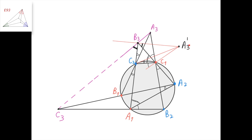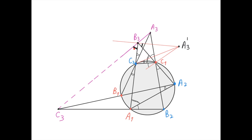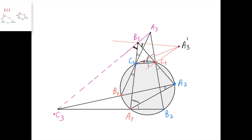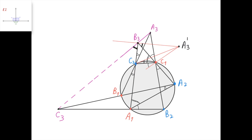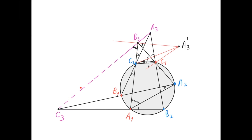We know that A3' and A3 are isogonal conjugates with respect to triangle C1, C2, B3. Therefore, line A3', B3 and line A3, B3 are isogonal with respect to this angle, meaning this angle equals this angle, where this angle is defined as 180 minus angle A3, B3, C2. Since A3' and C3 are corresponding elements in the similar triangles C2, C1, B3 and A2, A1, B3, we know angle A3', B3, C1 equals angle C3, B3, A1. This means angle C3, B3, A1 equals 180 minus angle A3, B3, C2, meaning that A3, B3, and C3 lie on a straight line.